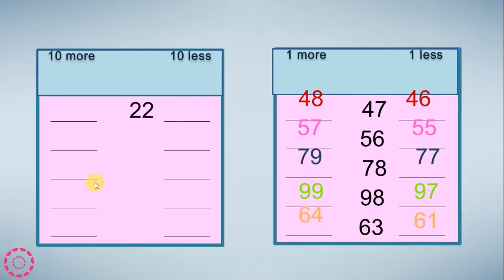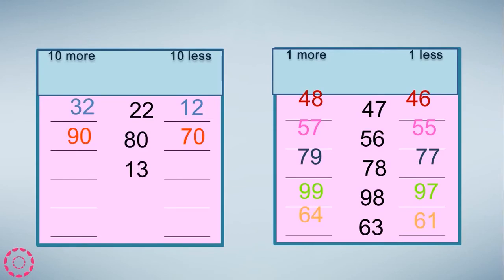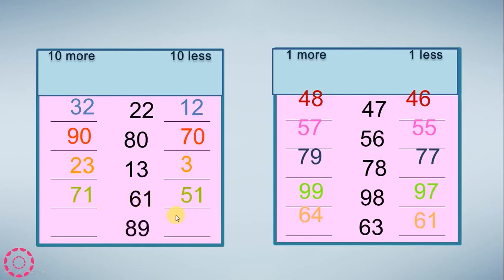10 less and 10 more. We have 22: 12 is 10 less than 22, and 32 is 10 more than 22. 80: 70 is 10 less than 80, and 90 is 10 more than 80. 13: 3 is 10 less than 13, and 23 is 10 more than 13. 61: 51 is 10 less than 61, and 71 is 10 more than 61. 89: 79 is 10 less than 89, and 99 is 10 more than 89.